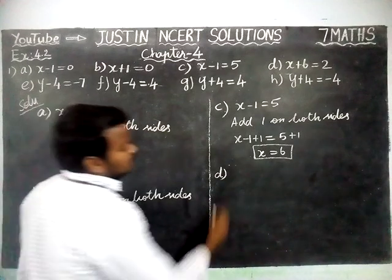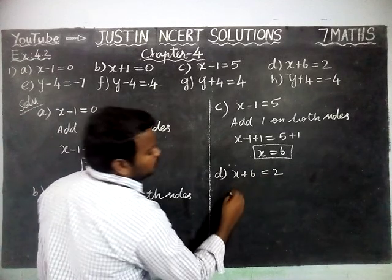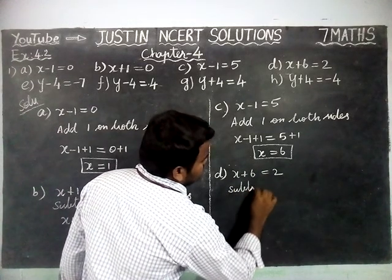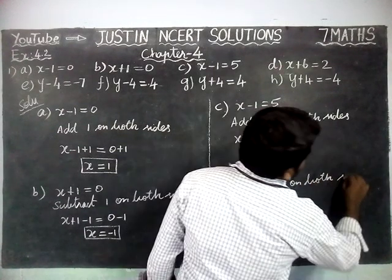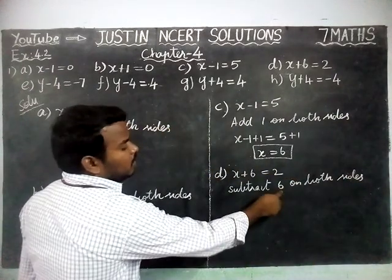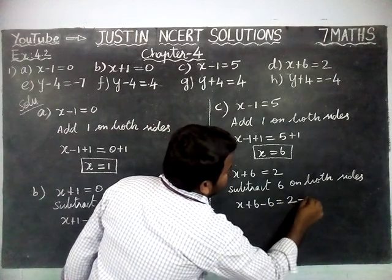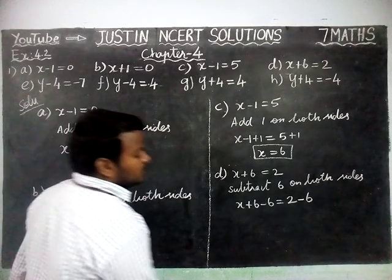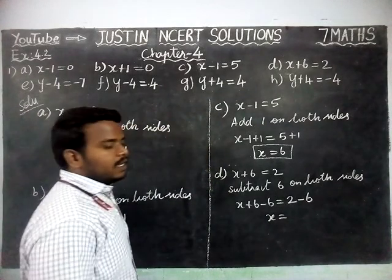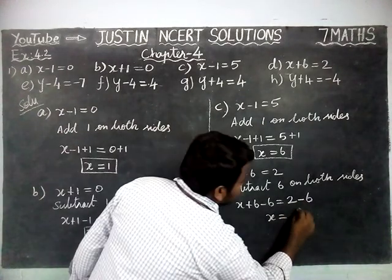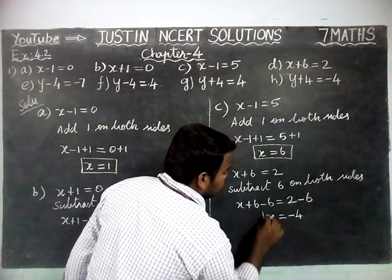Next part D: x plus 6 equal to 2. Here we have to cancel this 6, so we are going to subtract 6 on both sides. x plus 6 minus 6 is equal to 2 minus 6. Plus 6 minus 6 cancelled, so x is equal to 2 minus 6. Signs are different, so we find the difference: difference is 4 and the greatest number is 6, with a minus sign in front. So x is equal to minus 4.